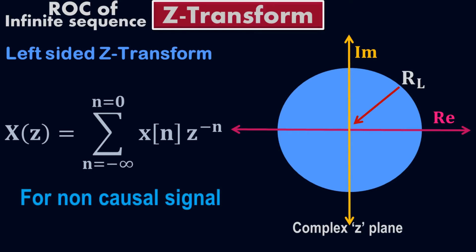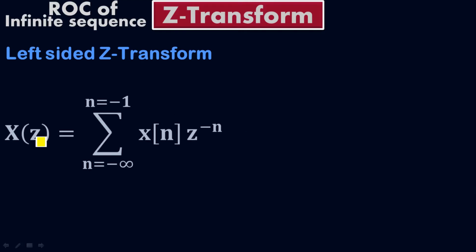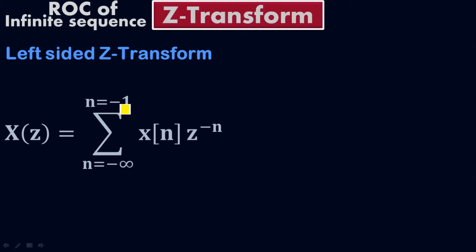Sometimes you will encounter this equation: x of z equals the summation of x of n times z to the negative n, where n starts from negative infinity up to negative 1. Many books use this form. Previously we had n up to 0; if you are working with the unit circle, you put n equals negative 1, because the radius of the unit circle is 1. If the radius is 2, you put n equals negative 2; if it is 3, n equals negative 3 — it depends on the radius.